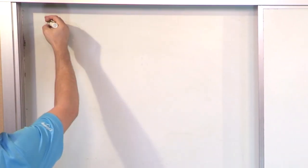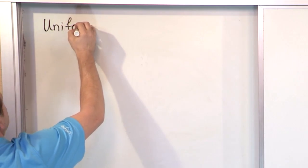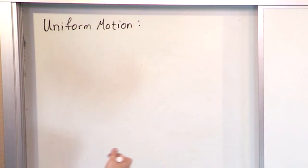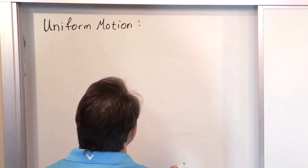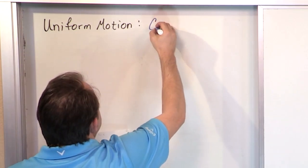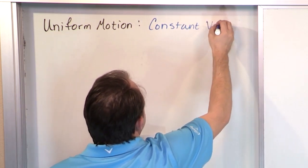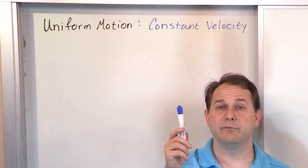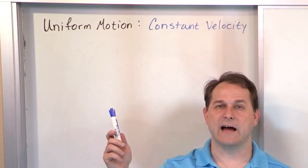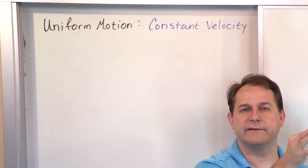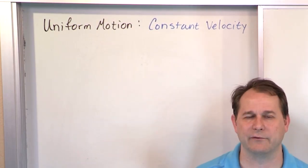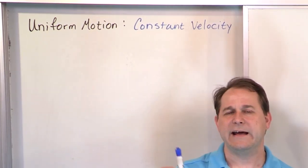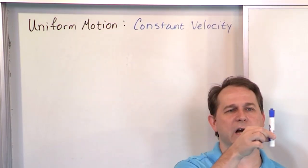You can think about uniform motion in three different ways. The first way is constant velocity — the object is moving but it's not speeding up and it's not slowing down. It's just marching along at some stately constant value. Nothing in real life travels at a truly constant velocity because you have friction, wind, or gravity, but in this perfect case we're going to say things are just moving along at a constant velocity.